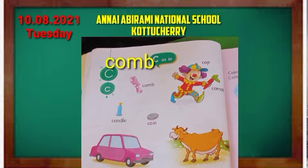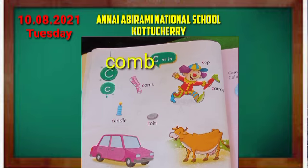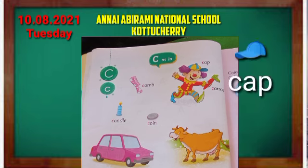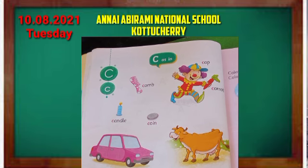Children, do you listen to this lesson? So finger on your book, dear students. So first picture is comb. The comb spelling is C-O-M-B. Comb. So next picture is cap. A cap spelling is C-A-P. Cap.